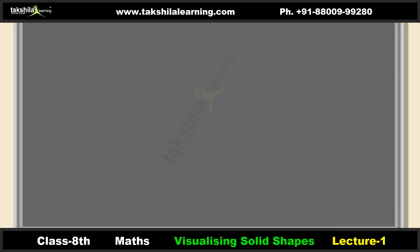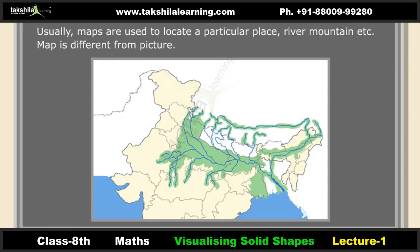Mapping space around us: maps are usually used to locate a particular place, river, mountain, etc. A map is different from a picture. This map is drawn by Radha, and in this map the route from her house to her uncle's house is shown.